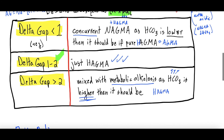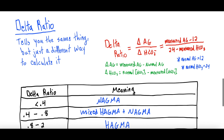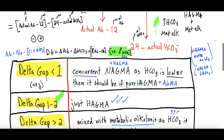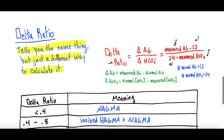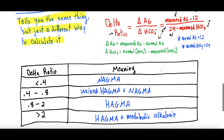Another way to think about this is the delta ratio, which tells you the exact same thing as the delta gap but uses division instead of subtraction. The delta ratio = change in anion gap ÷ change in bicarbonate = (measured anion gap − 12) ÷ (24 − measured bicarbonate). It's literally the same equation as the delta gap except these two components are divided rather than subtracted.